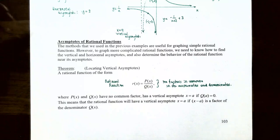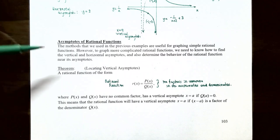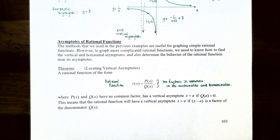Let's talk about asymptotes of rational functions. The methods used in the examples in the previous video are useful for graphing simple rational functions like functions that can be compared to y equals 1 divided by x or y equals 1 divided by x squared. However, to graph more complicated rational functions we need to know how to find the vertical and horizontal asymptotes and also determine the behavior of the rational function near these asymptotes.